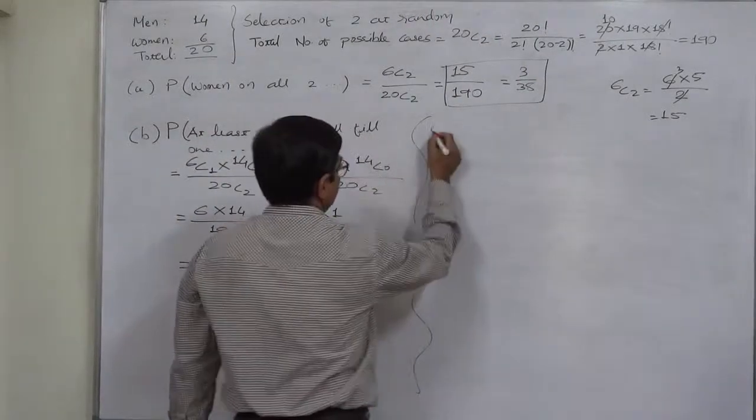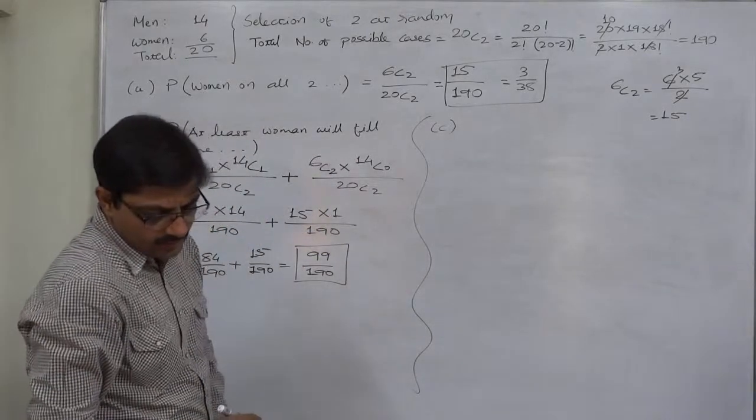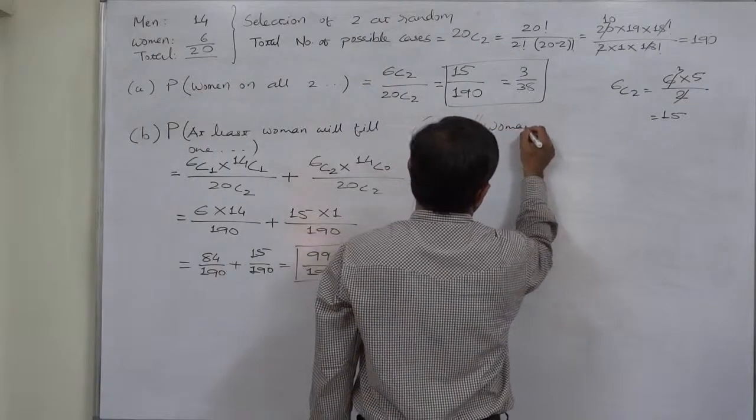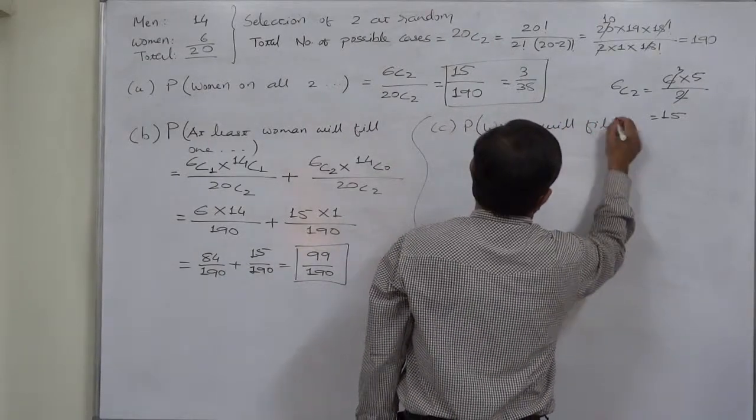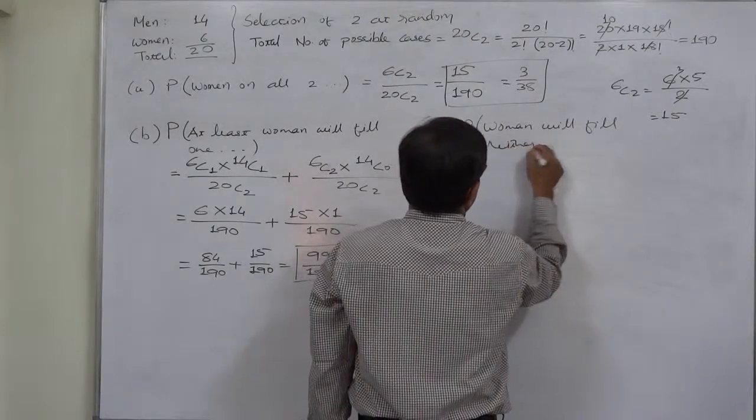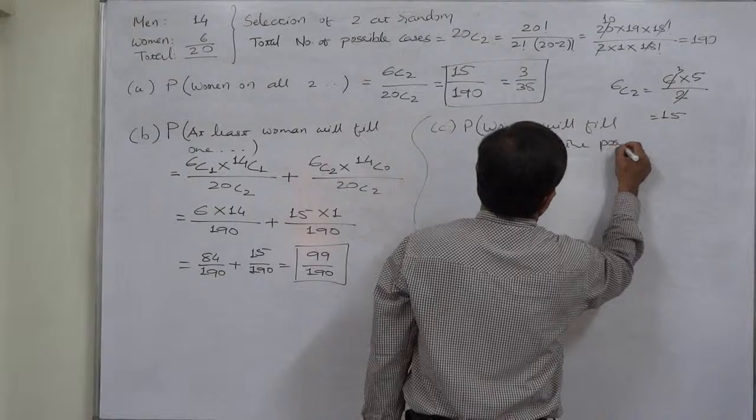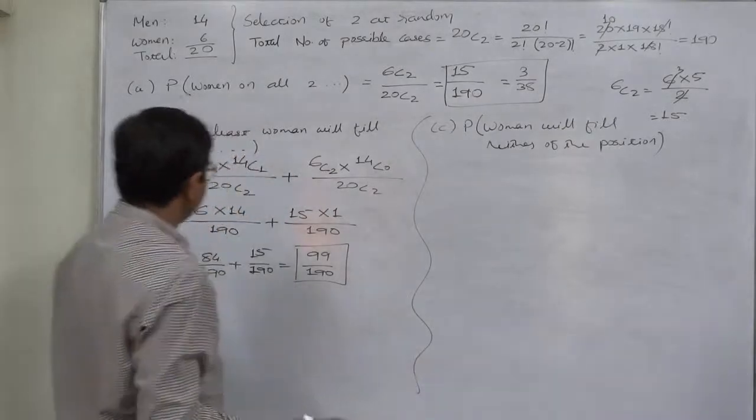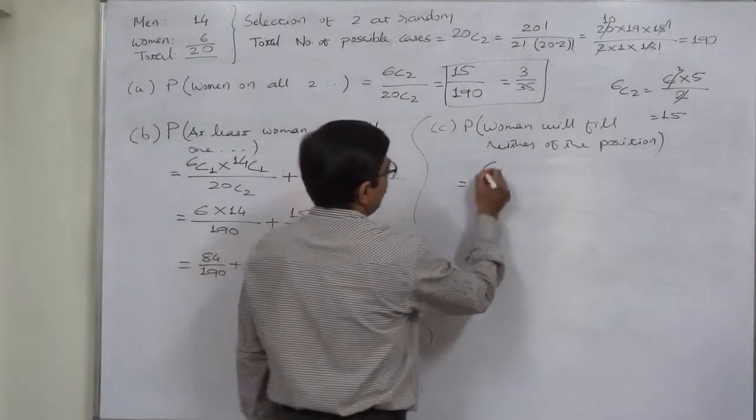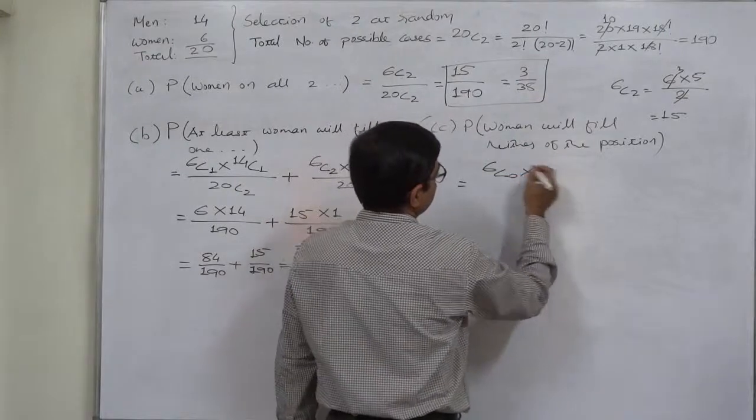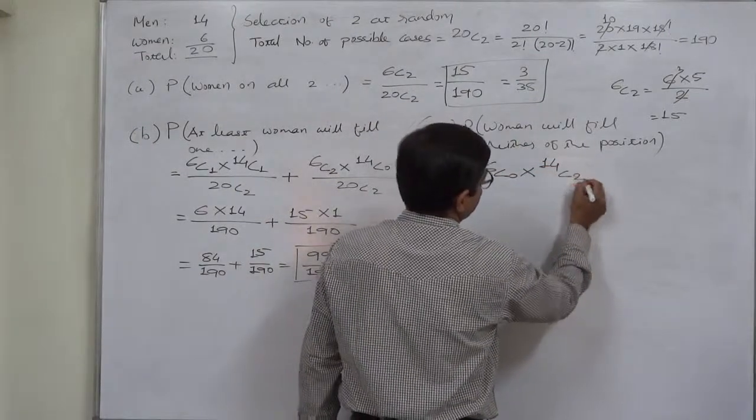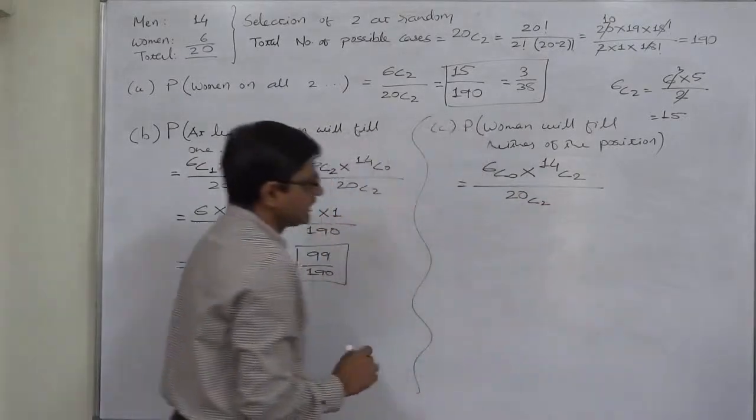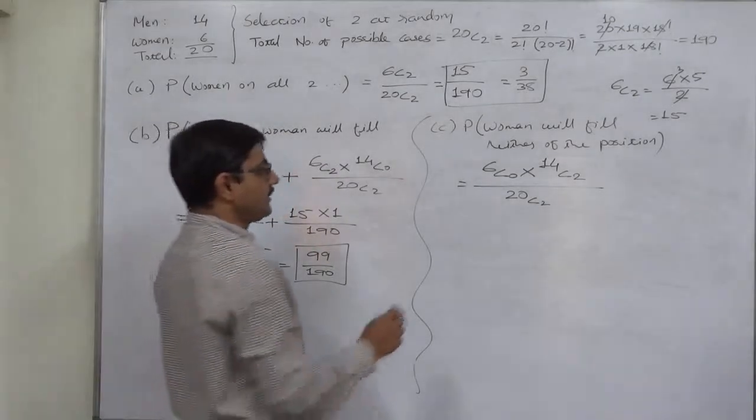Now the third case or third sub-question is woman will fill neither of the position. Probability that woman will fill neither of the position. Woman will fill neither of the position, that means no woman will be selected out of 6. No woman out of 6, 6C0. That means all the two are selected out of 14 men. So ultimately the probability can be calculated as 6C0 into 14C2 divided by 20C2.